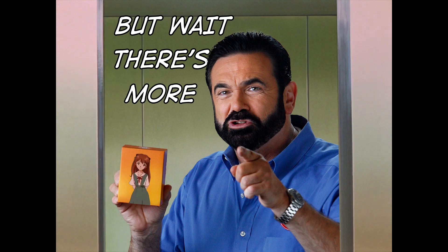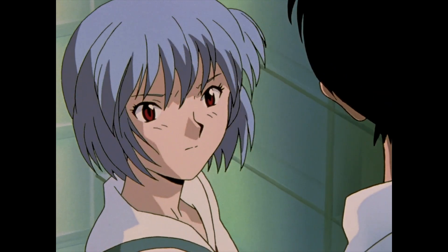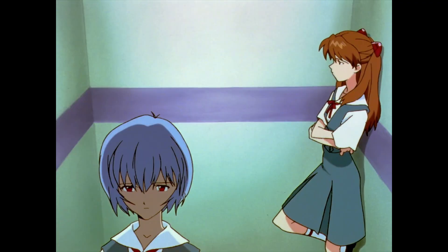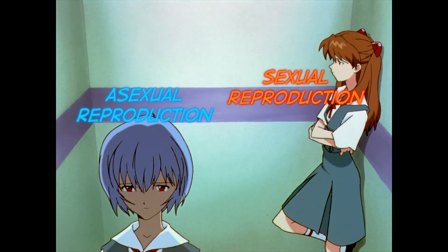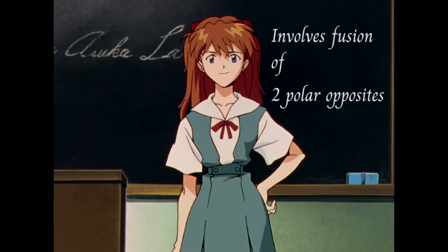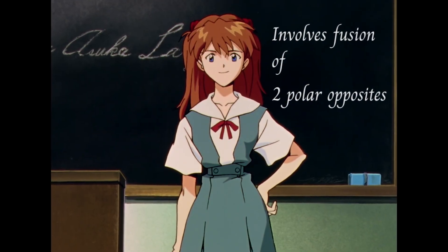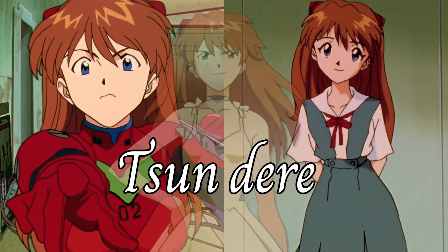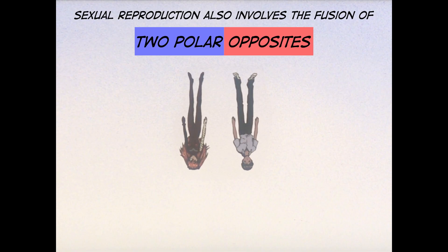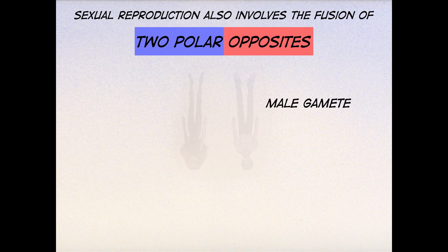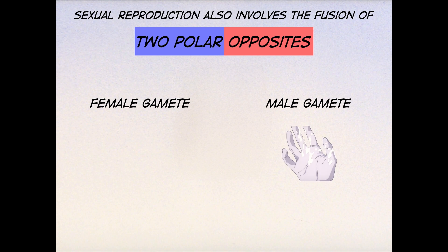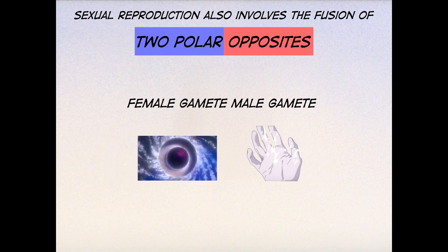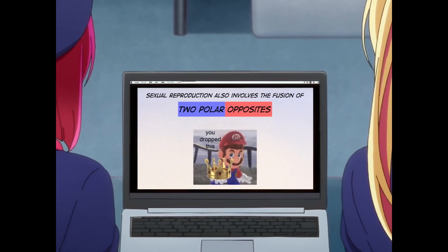But the similarities don't end here. The character arcs and personalities of these two waifus also mirror the characteristics of sexual and asexual reproduction. For example, Asuka involves the fusion of two polar opposites — Tsun and Dere — to form the ultimate life form known as a tsundere. Sexual reproduction also involves the fusion of two polar opposites: a male and female gamete, such as a sperm and an egg, fuse to form the ultimate life form that is currently watching this video.